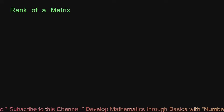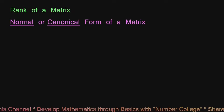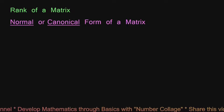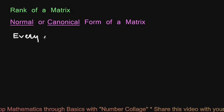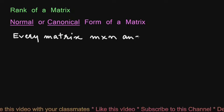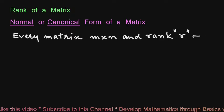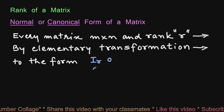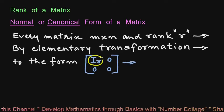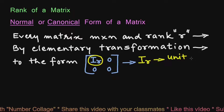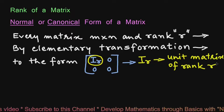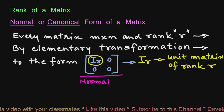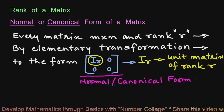In my previous video, we discussed rank of a matrix. In this video, we are going to discuss normal or canonical form of a matrix. Every matrix of order M by N and rank R can be reduced by elementary transformation to the form [IR | 0; 0 | 0], where IR is a unit matrix of rank R. This form is called the normal form or canonical form of the given matrix.